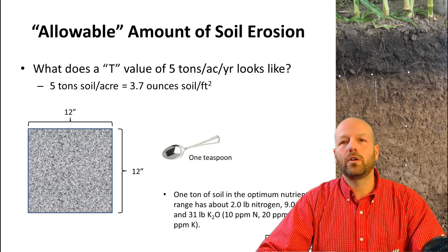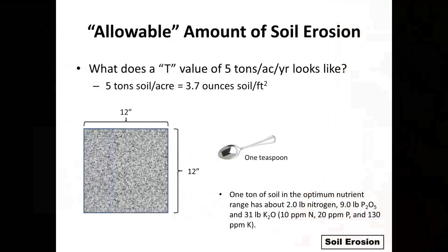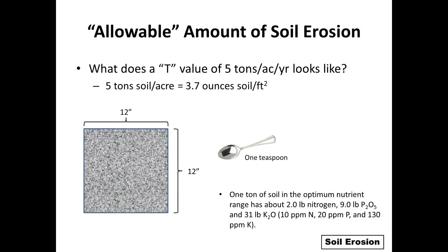Taking it another step further, if we look at the value of the fertilizer — just the nitrogen, phosphorus, and potassium in one ton of soil — it can have quite a dramatic impact. For a soil in the optimum nutrient range, you could be losing about 2 pounds of nitrogen, 9 pounds of P2O5, and 31 pounds of K2O per ton of soil. If you multiply that by 5 and try to replace it with fertilizer, it can have a fairly large economic impact.